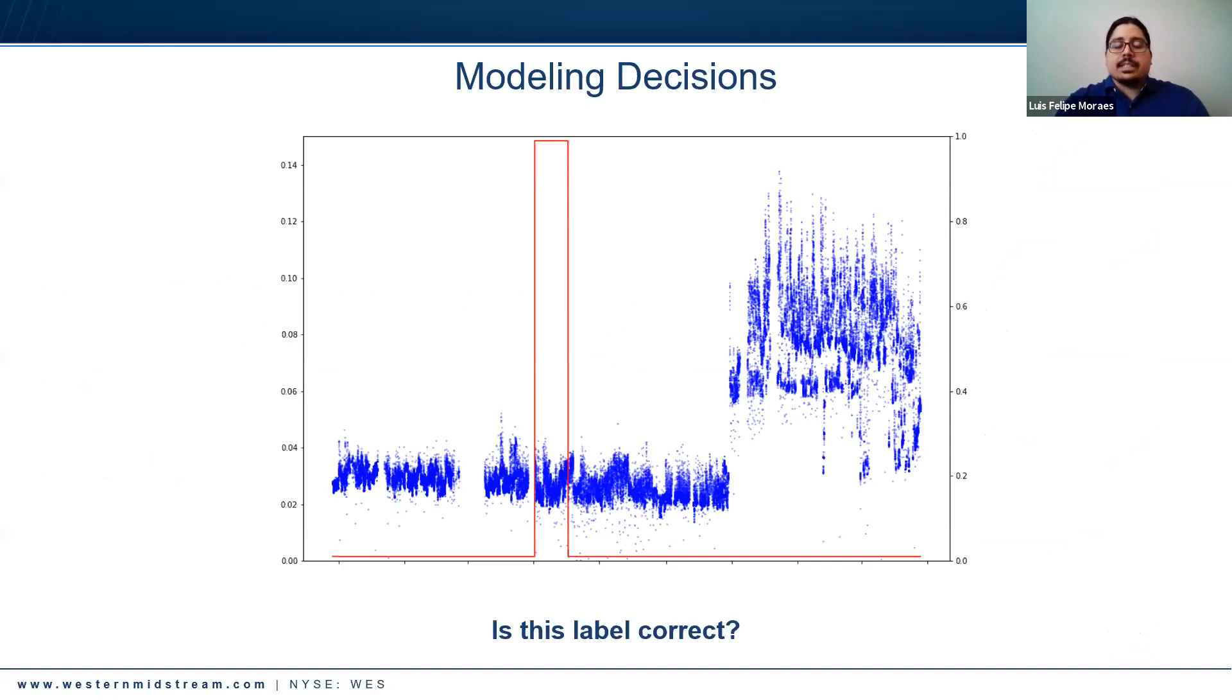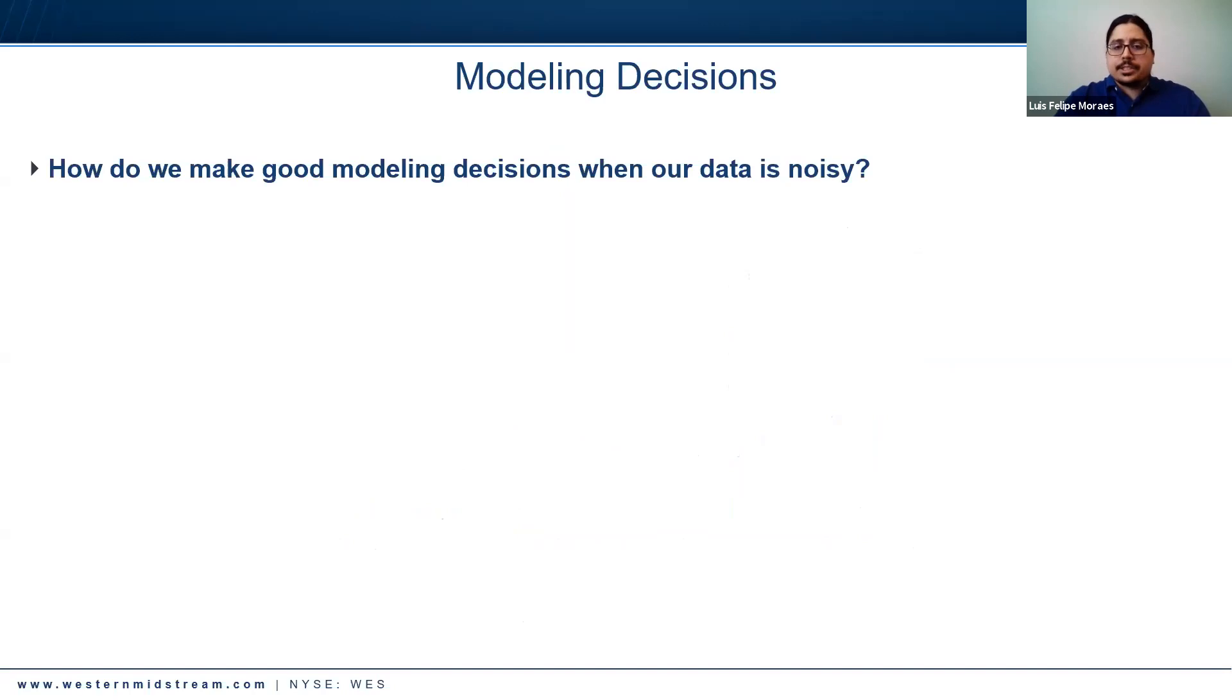Let's move on to modeling decisions. To give an example of why these decisions were not straightforward, this is an example of our noisy labels. Is this label correct? I'd say it's pretty hard to tell. You have something distinguishing this middle segment, but to the left and right of it the data looks the same. Why is this part a failure and the rest isn't? It could very well be that the label is correct - we tried to verify as much as we could, but at some point you just had to let the algorithms take it from there and hope they could deal with the noise.